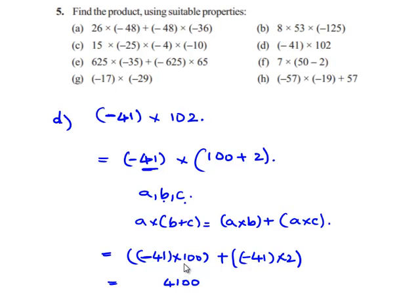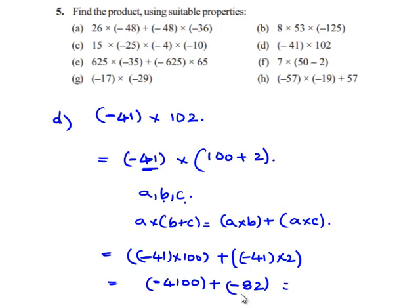As the signs are different, we get a negative 4100. We are left with negative 41 times of 2. 41 into 2 gives 82. As the signs are different, we get a negative sign. Therefore, negative 4100 plus negative 82 gives negative 4182. Therefore, the answer is negative 4182.